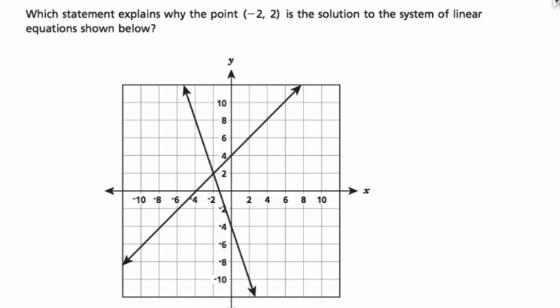Let's solve this problem together. Which statement explains why the point (-2, 2) is a solution to the system of linear equations shown below? So this point right here is what we're talking about. It's the point (-2, 2).